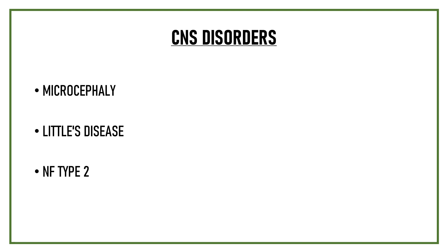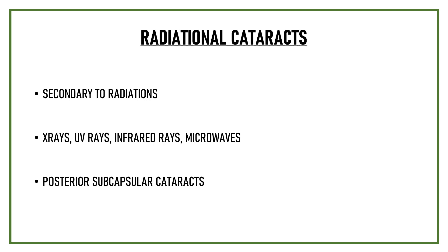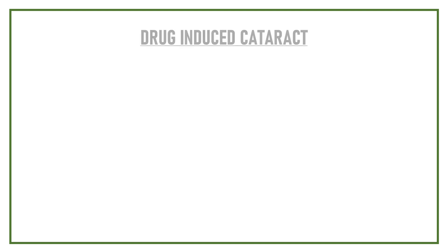Cataracts can also occur secondary to exposure to ionizing radiations — X-rays, UV rays, infrared rays, and microwaves. These cataracts are usually posterior subcapsular cataracts and are known as radiational cataracts.